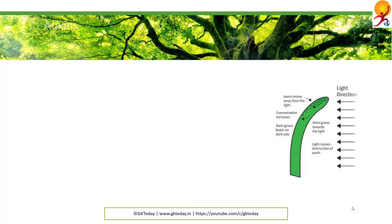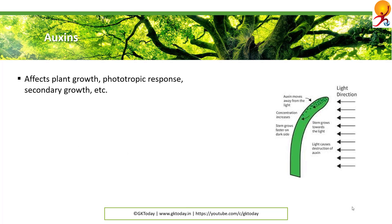Auxins. Auxin is a group of plant hormones that produces a number of effects including plant growth, phototropic response through the stimulation of cell elongation — phototropism — that is, the plant grows towards the light. Stimulation of secondary growth, apical dominance, and the development of leaf traces and fruit.